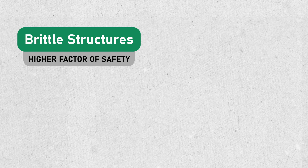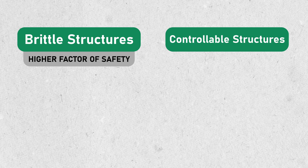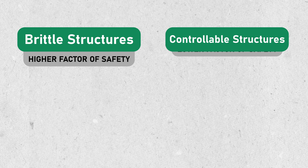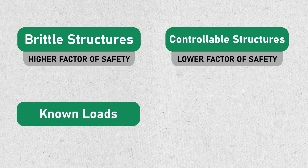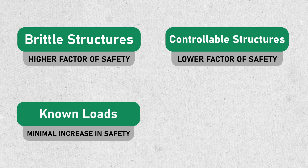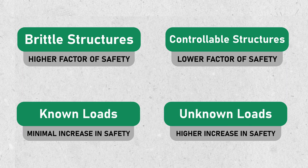If something is more controllable, you know how it behaves and you have a little bit of warning, have a lower factor of safety. If the load is known, don't increase it as much. If there are unknowns to that load, increase it more. It's all about statistics and making sure that you're overlaying those bell curves from each side to making sure that you're leading to a very similar factor of safety across your design.